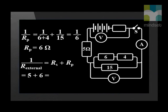Next, we add our series resistor to the total parallel resistance to find our load, external resistance. And we have our answer of 11 Ohm.